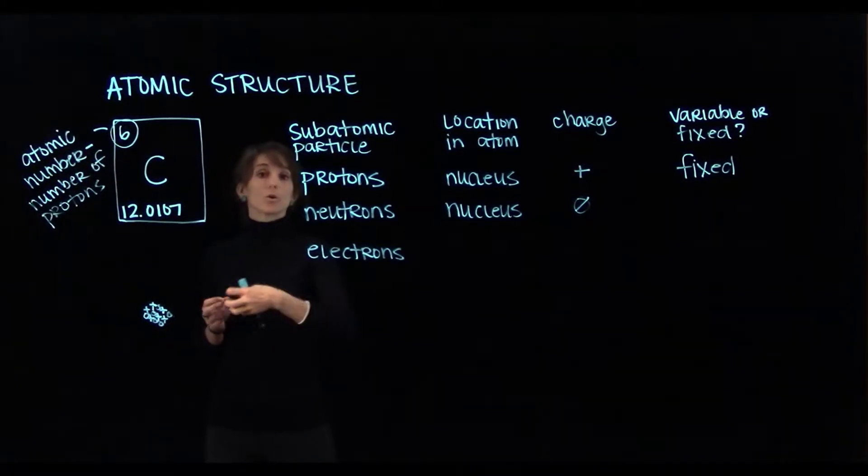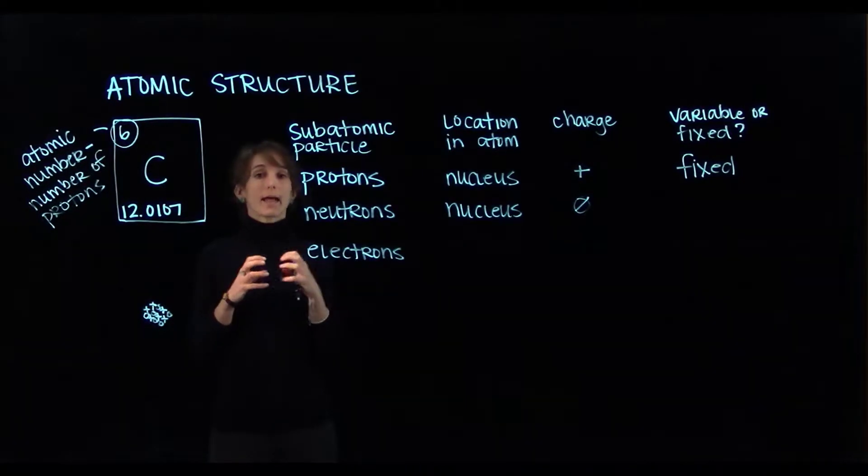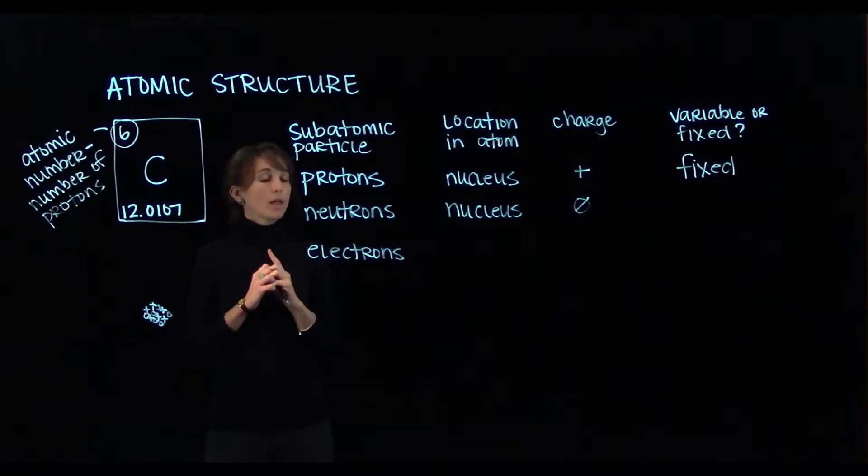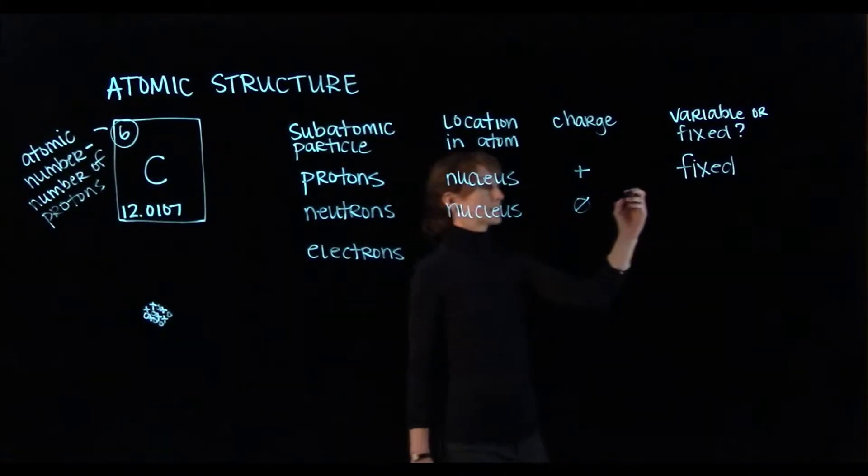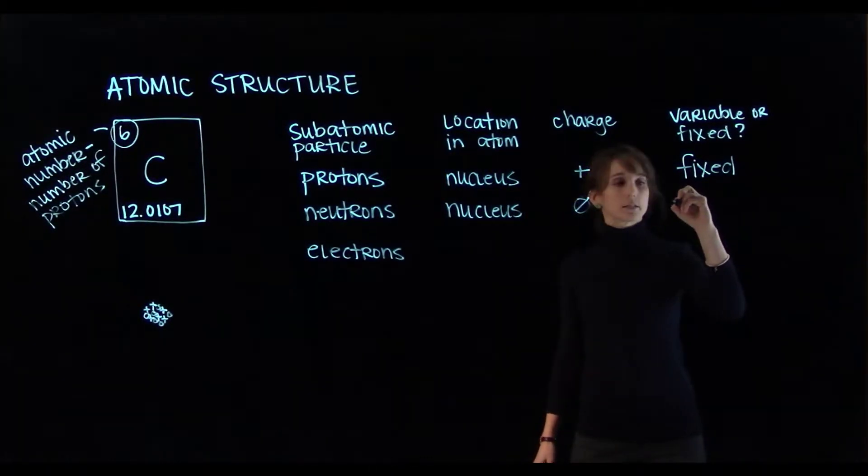If we add a proton, or if we take a proton away, that atom is no longer carbon. The number of neutrons in an atom can vary, so we'll say that the number of neutrons is variable.